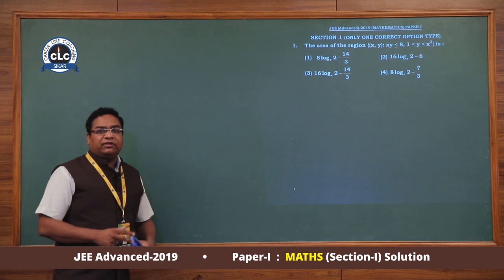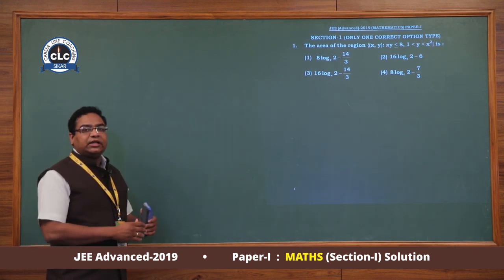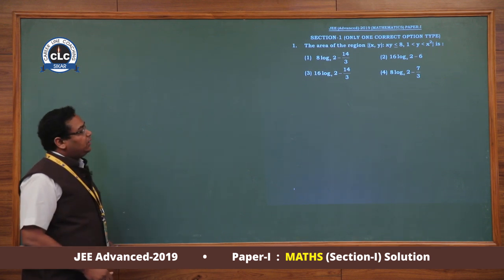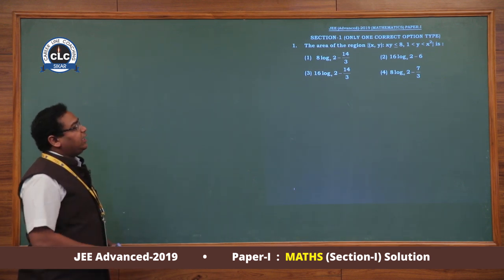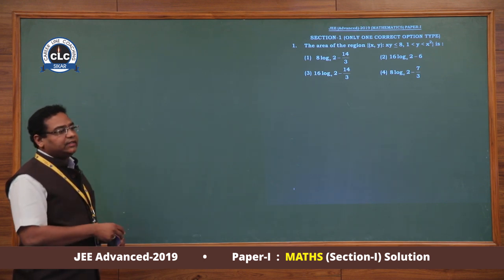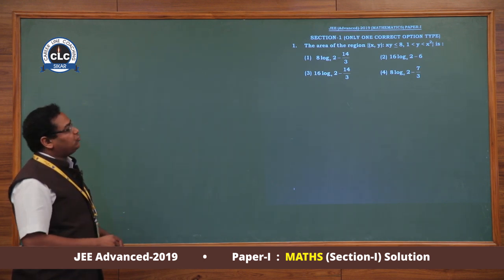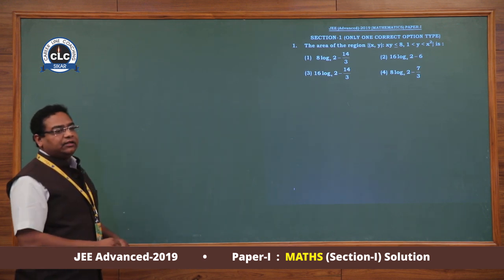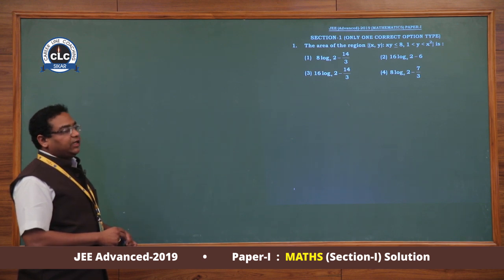Section 1st, we have 4 questions which are single-choice questions. The first question: we have given an area — the collection of points (x, y) which satisfy the conditions xy ≤ 8 and 1 ≤ y ≤ x².